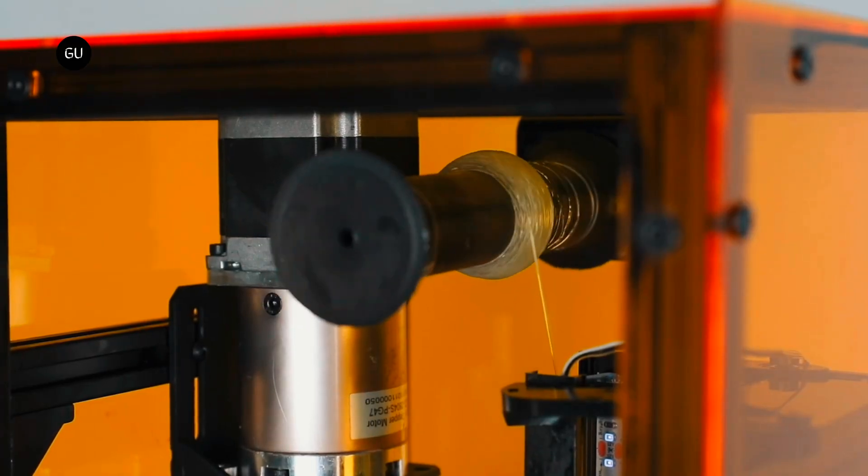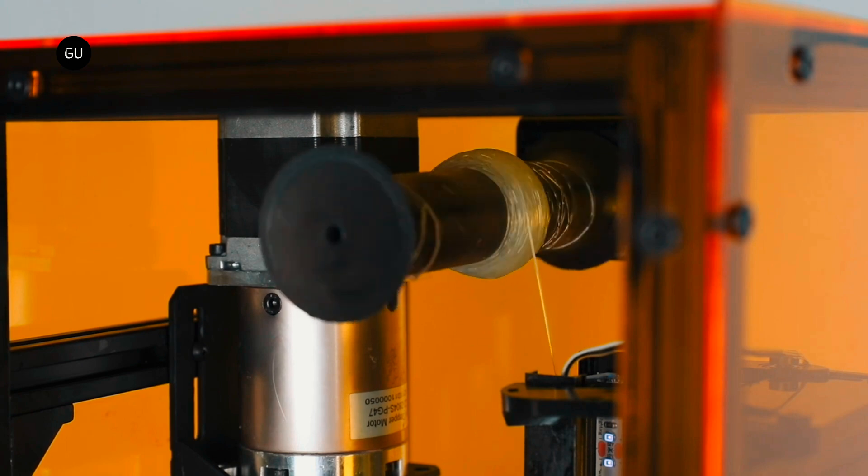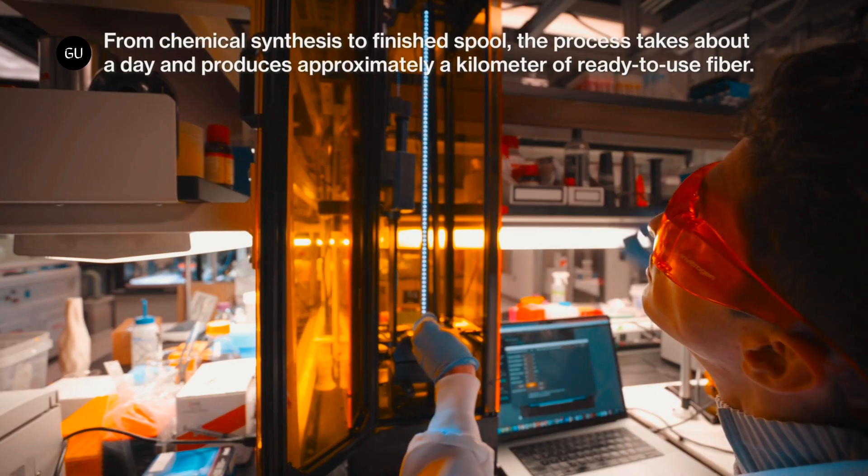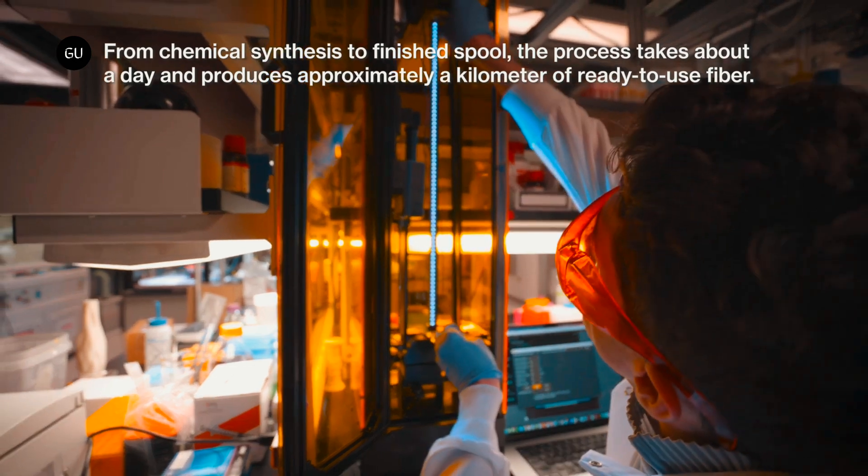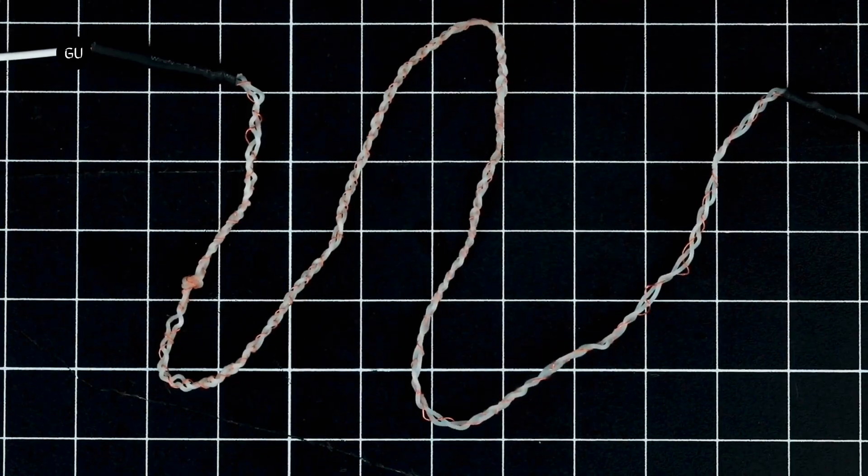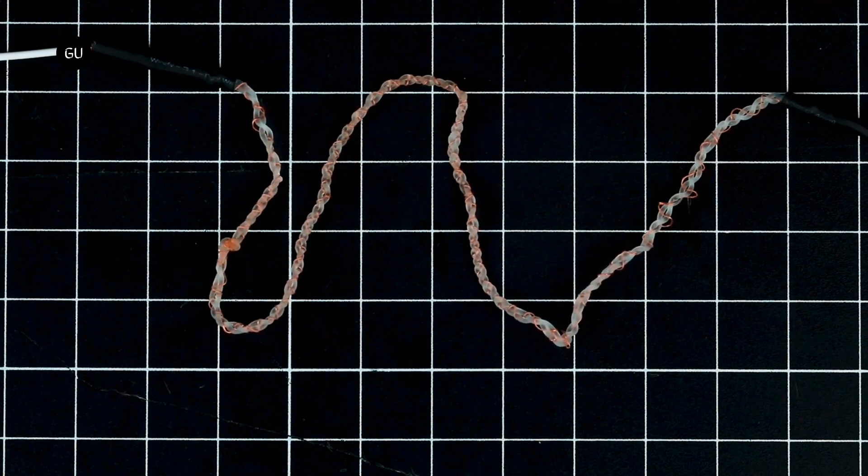The fiber, which the researchers dubbed Fibrobo, can be produced at 20 cents per meter (3.3 feet), about 60 times cheaper than commercially available shape-changing fibers. It can contract up to 40% without bending, although the skin-safe version contracts up to about 25%.